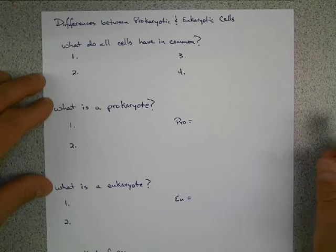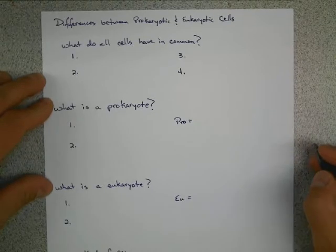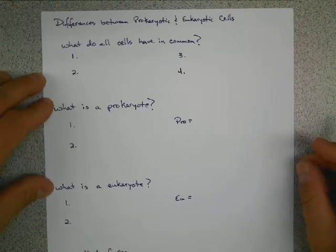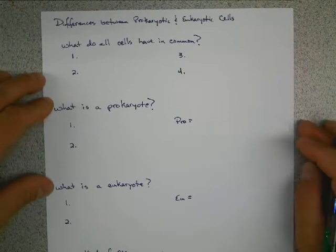Cell theory has three parts. One, all living things are made up of cells. Two, the cell is the basic unit of life. And three, all cells come from other cells.